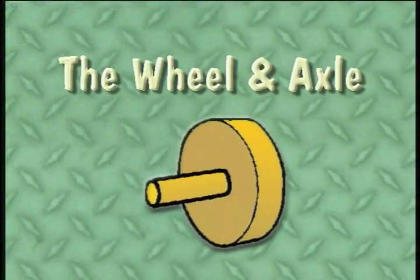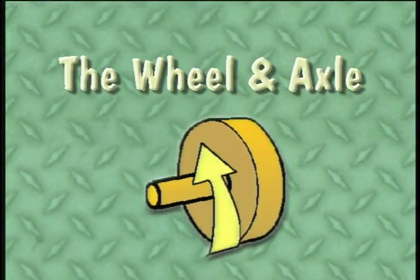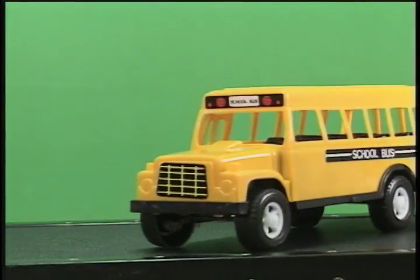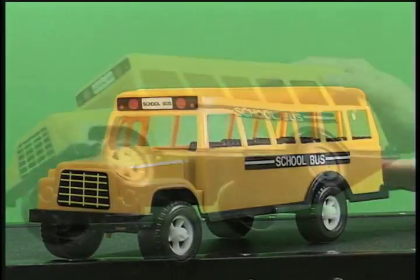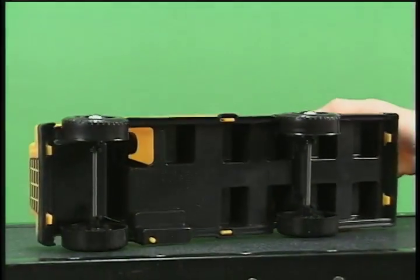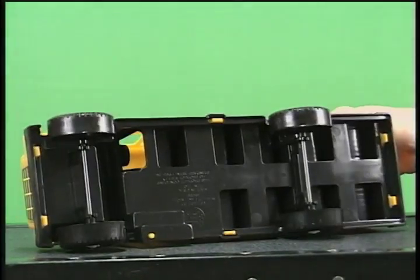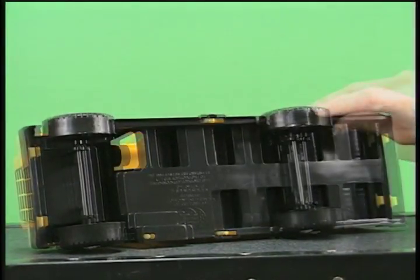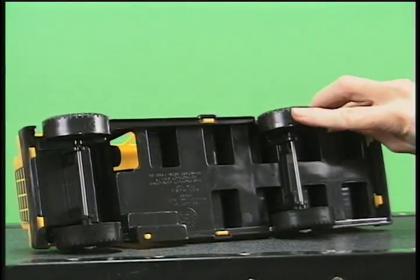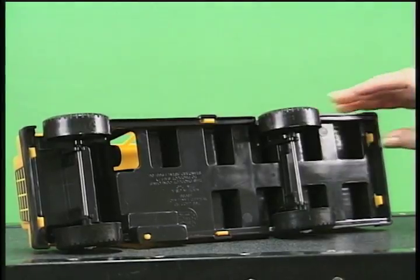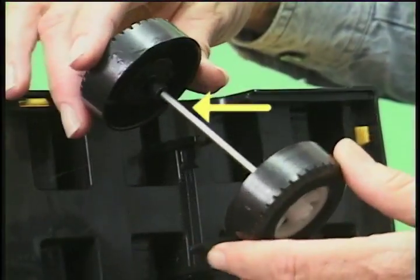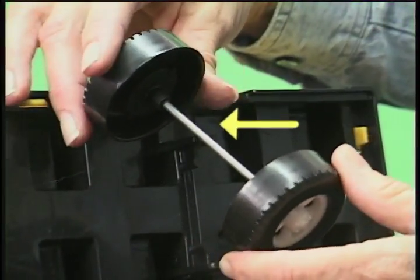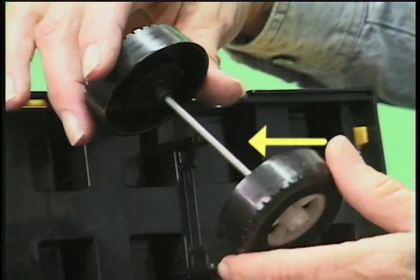The wheel and axle. The wheel is a round object, like a disc. It turns on an axle. An axle is a bar. The wheel turns around.